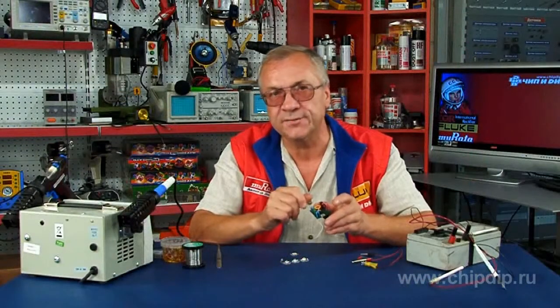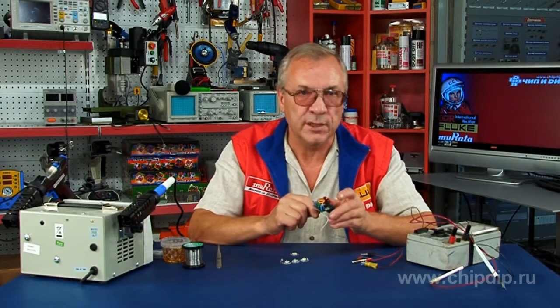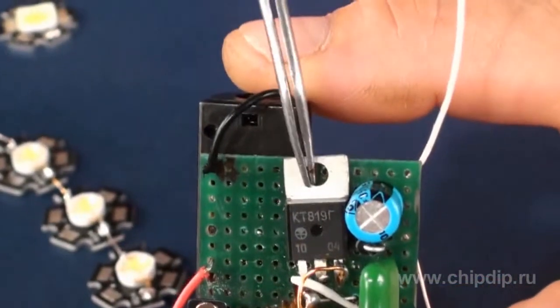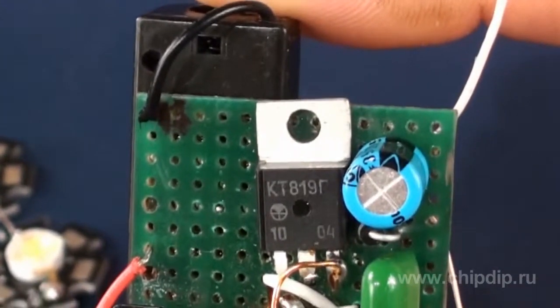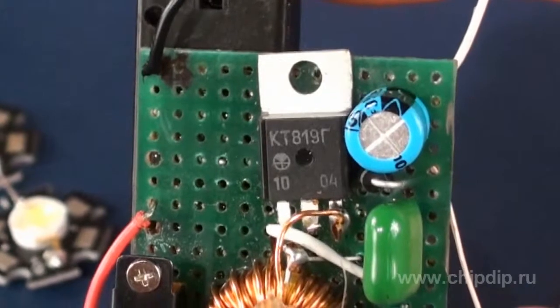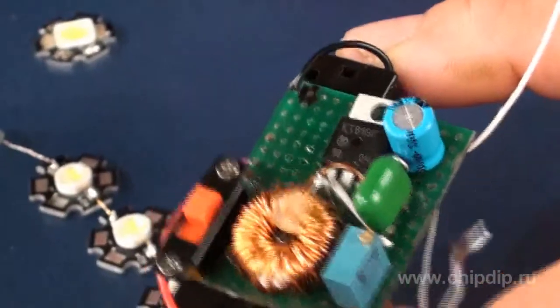The device's core is a powerful KT819G transistor that controls all circuit modes. Remaining parts include a Schottky diode, a couple of capacitors, and a current-limiting resistor, preferably a trimming one.